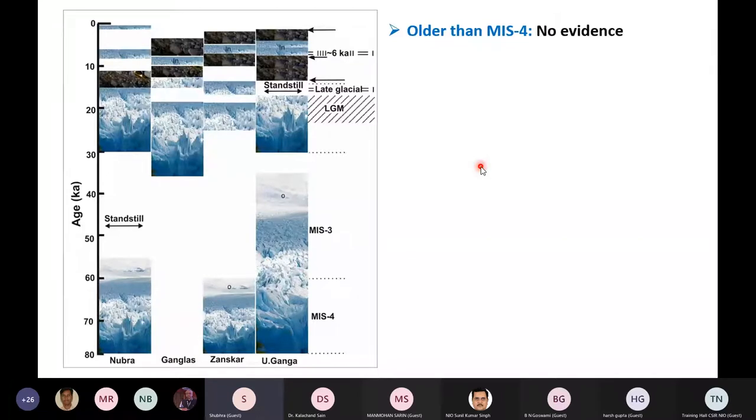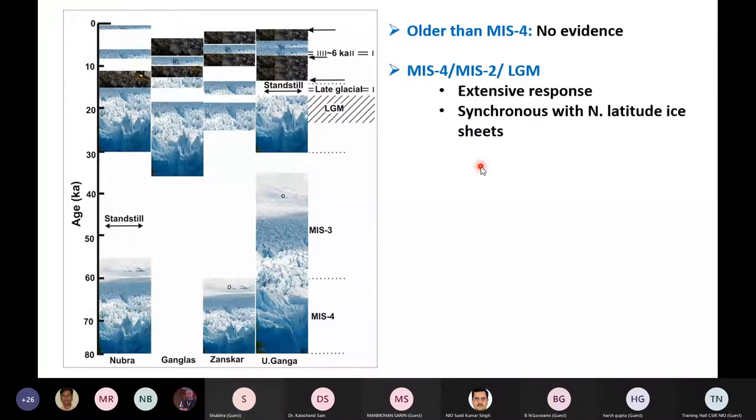This is in contrast with some of the earlier suggestions which suggested Himalayan advancement in Ladakh Himalaya as old as 400 kilo years. As I said previously, the glaciers we found are sensitive to the colder, westerlies dominated phases, that is MIS-4 to particularly the last glacial maxima.